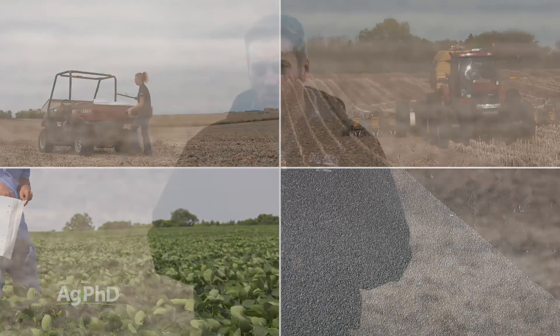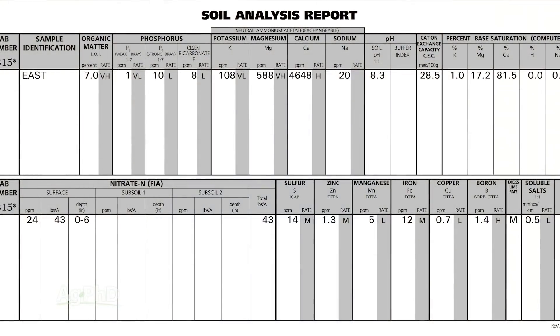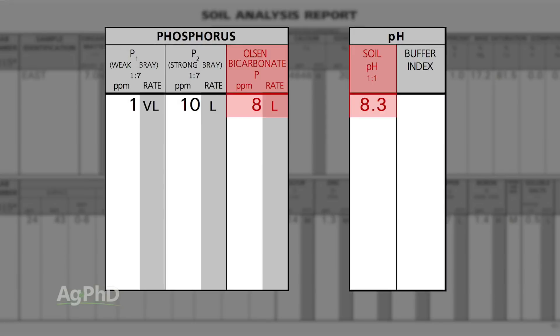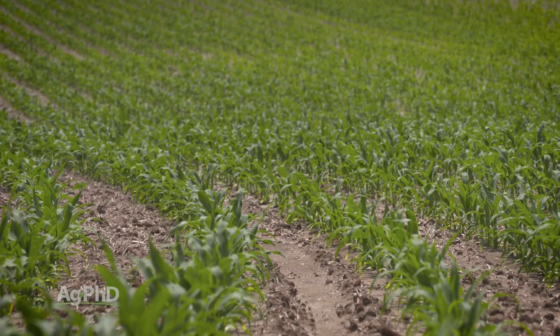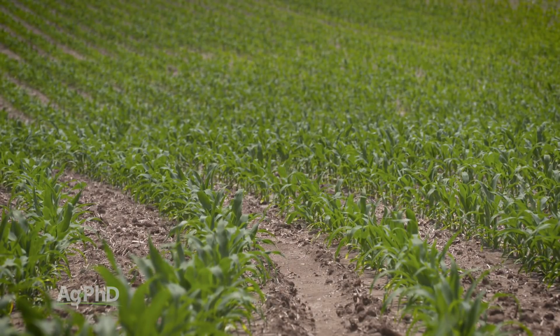When we look at managing phosphorus in soils, one of the first things that pops out is: which type of measurement are you going to use to look at how much phosphorus will be available? In high pH soils, we like the Olsen bicarbonate test better than the Bray test, because the extraction method is a little more accurate as to how much phosphorus will be available for you this particular year.